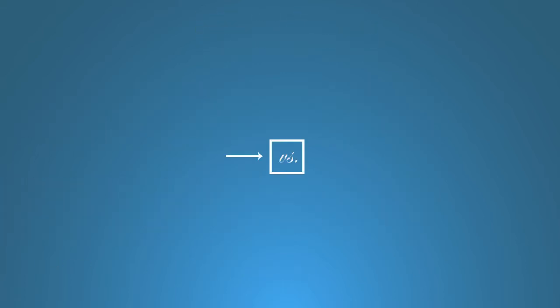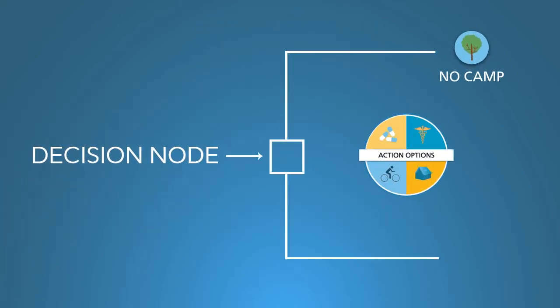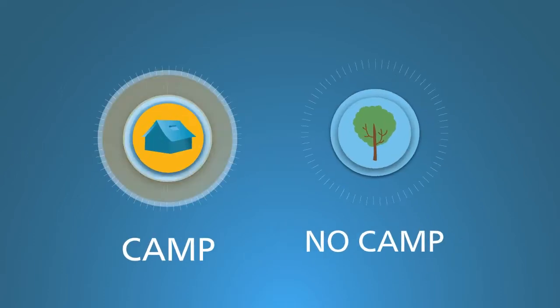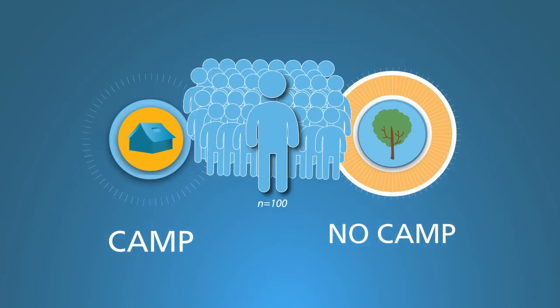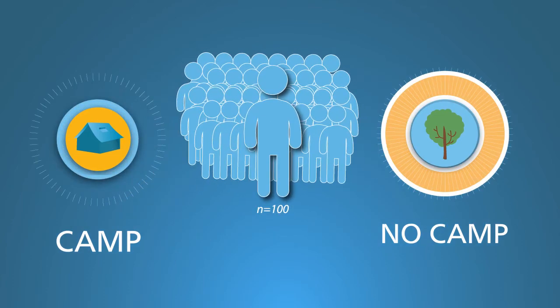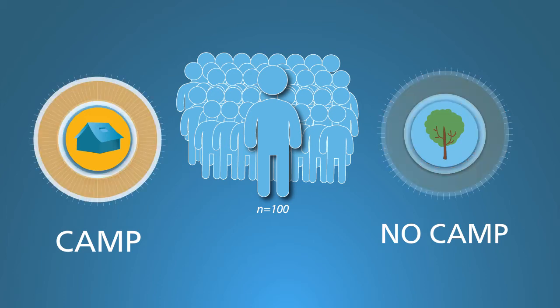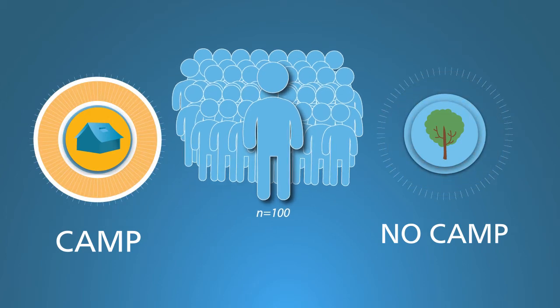This square represents a decision node — the choice of no camp versus a circumcision camp. As we've said, CEA always examines a comparison. Here, the comparison option is doing no camp. So in this tree, all 100 men go to either no camp or circumcision camp, and the subsequent branches show what happens as a result.